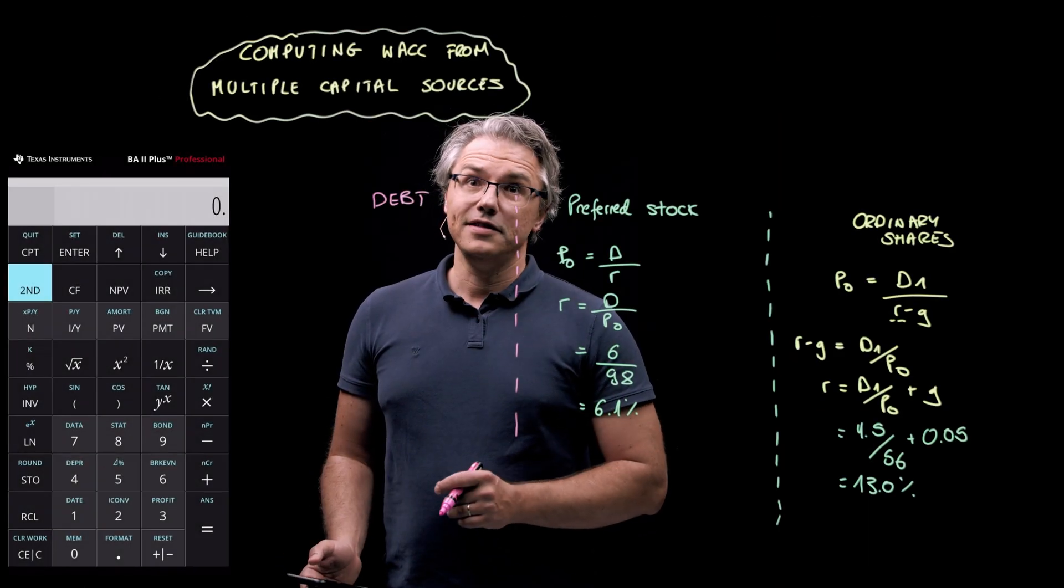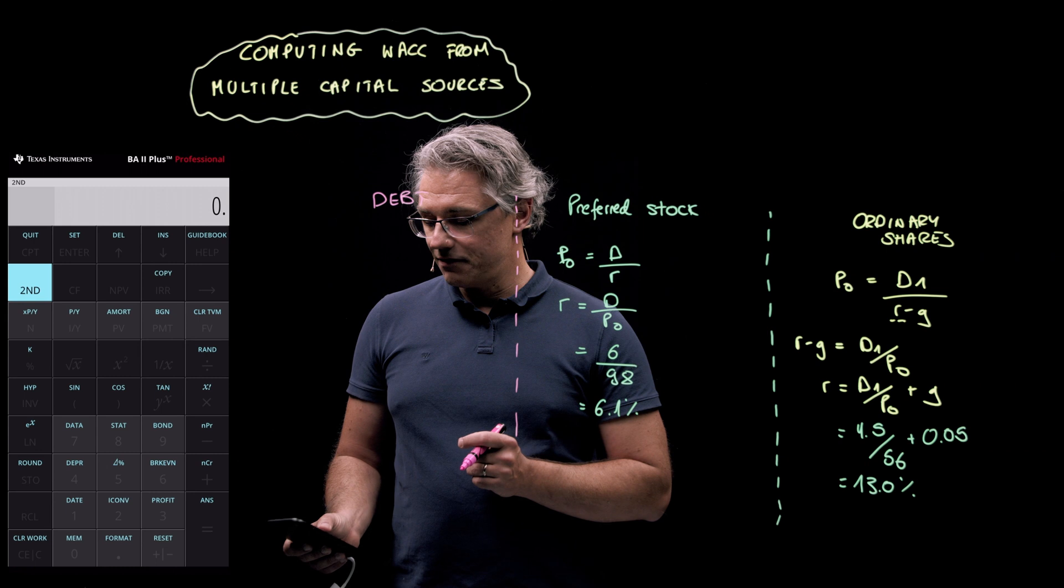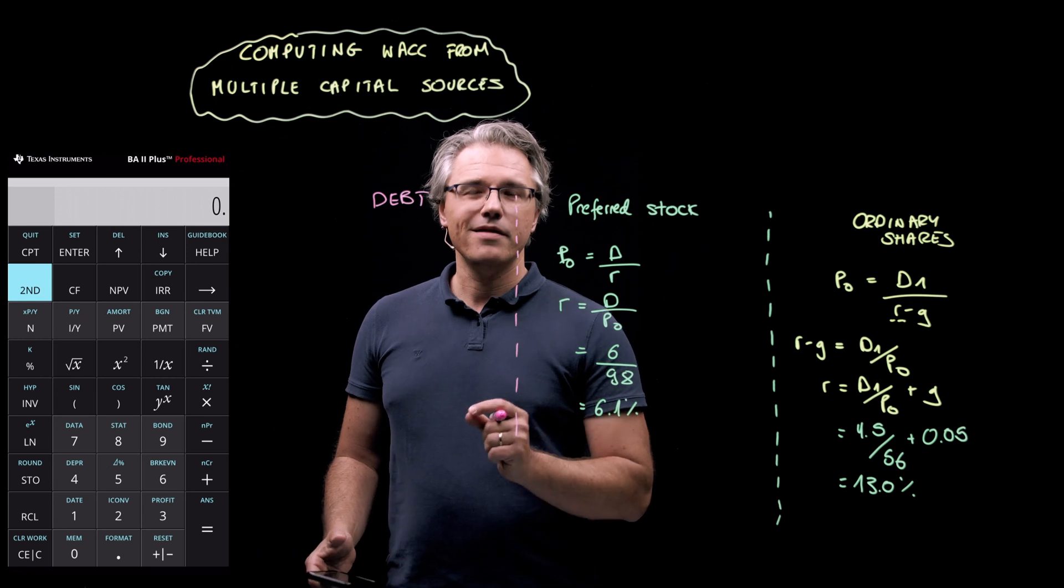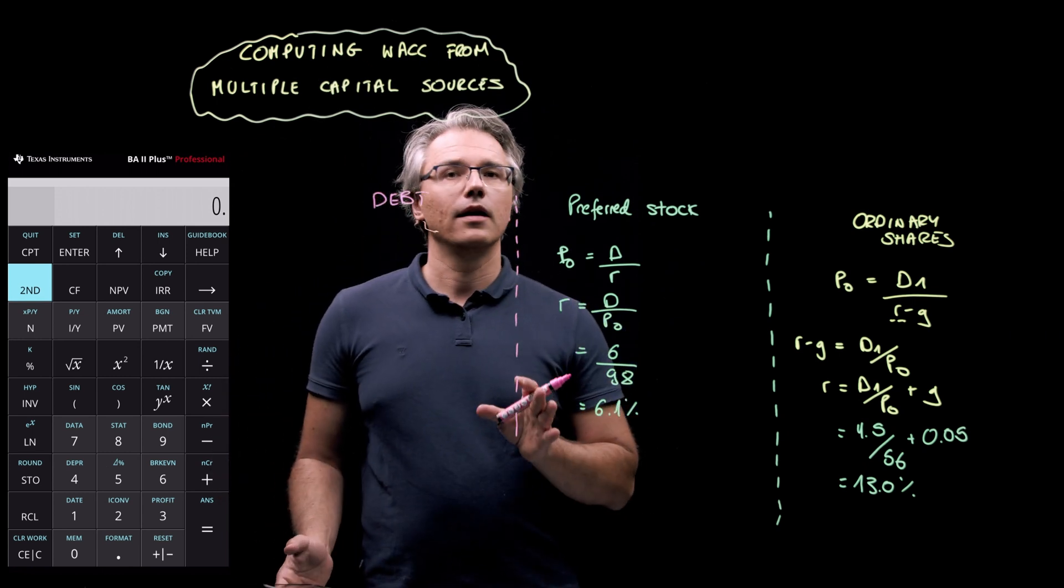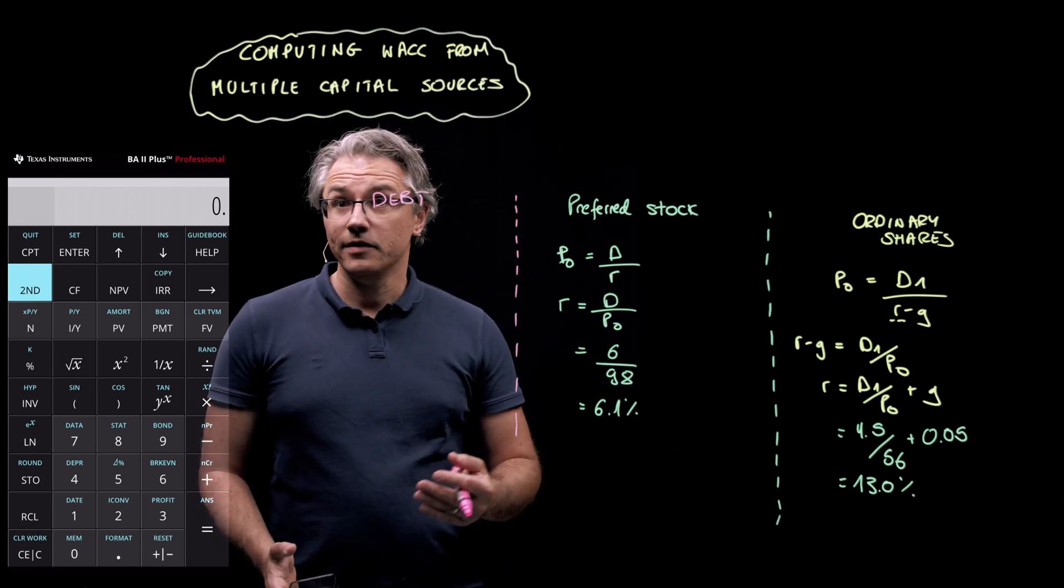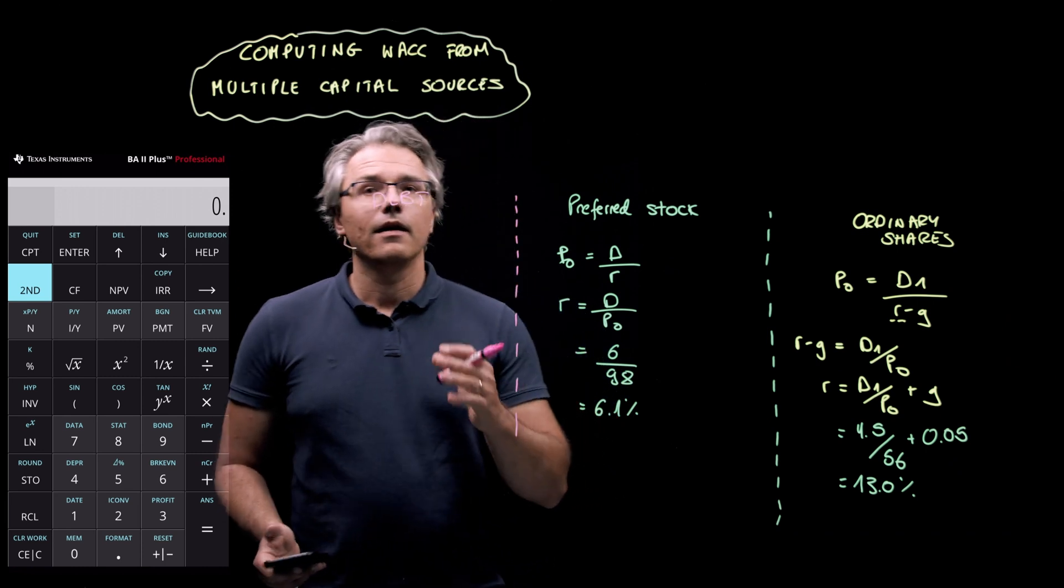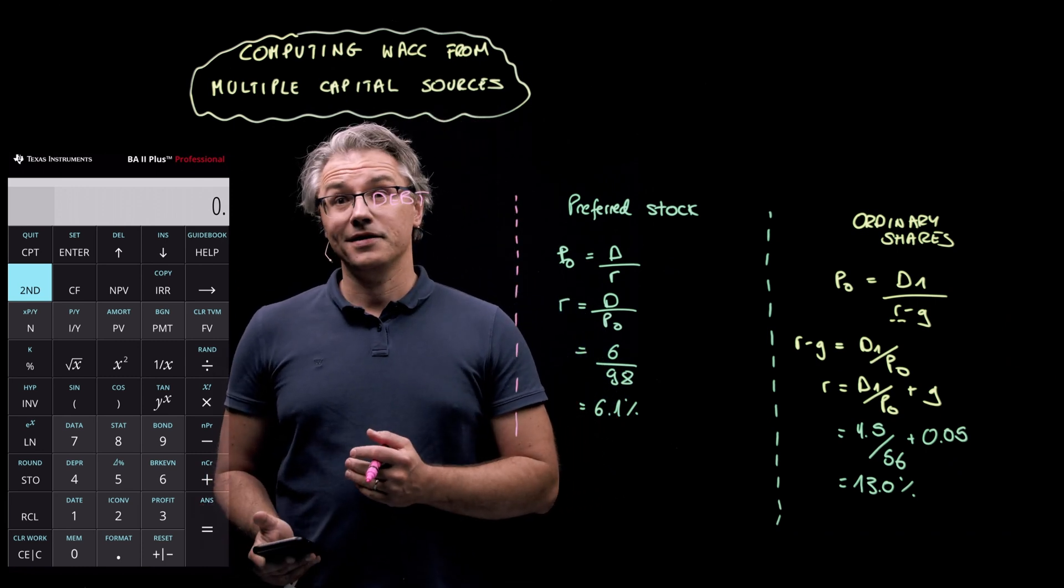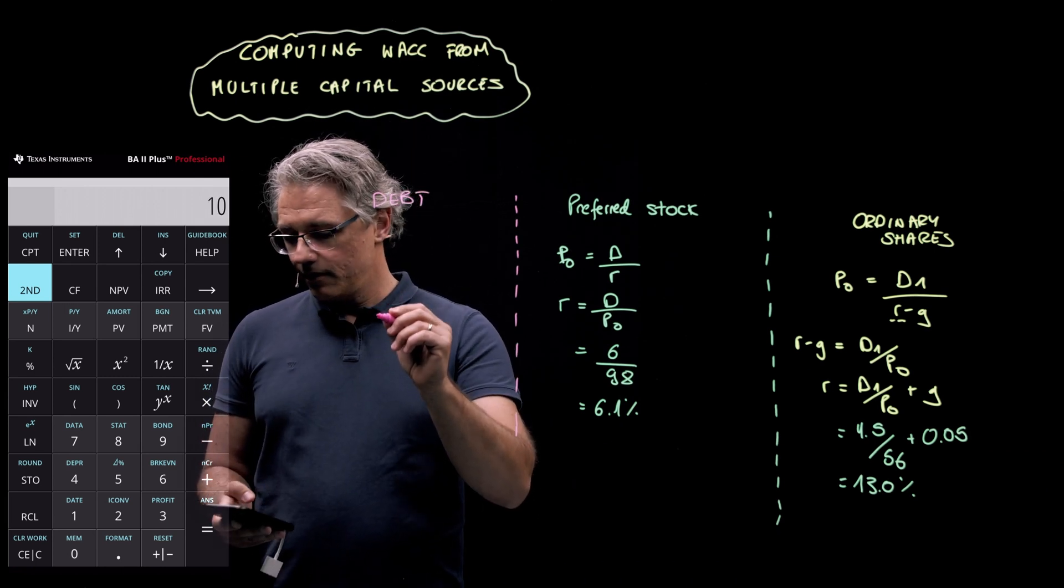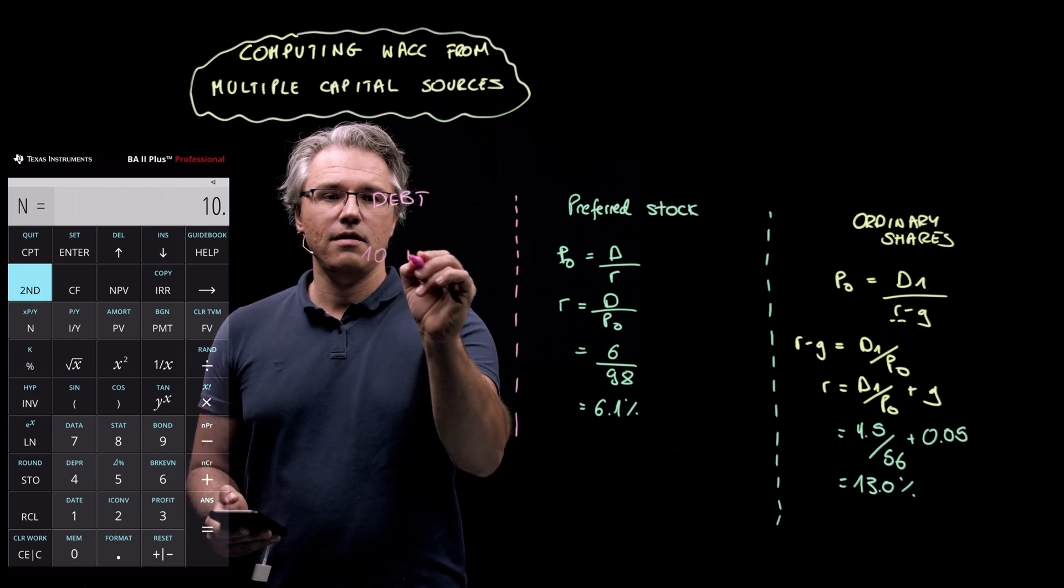Always remember to clear the TVM worksheet first. So, we do this by pressing 2nd followed by FV where FV has the secondary function clear TVM. And now we are ready for the actual inputs. It doesn't matter what order you actually provide these inputs in. I'm going to start with N. That's going to be the number of periods. N is going to be set at 10, seeing as the bonds are 10-year bonds. So, what I need to do is press 10 or input 10 followed by the N key. So, 10 followed by N.